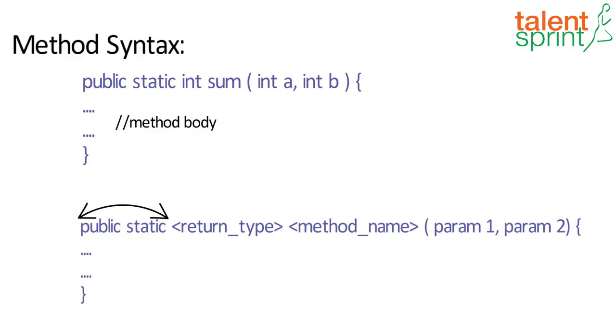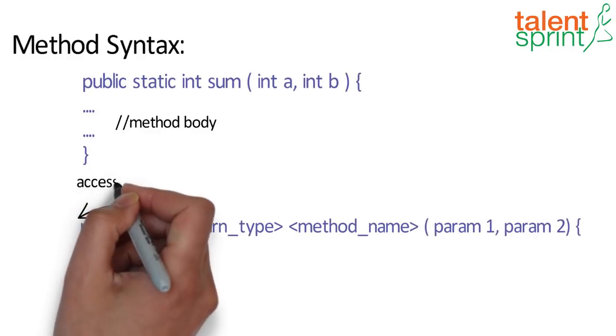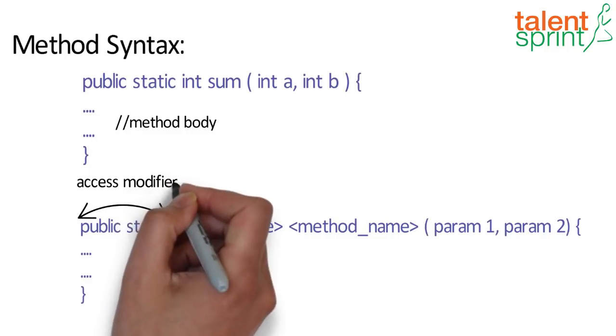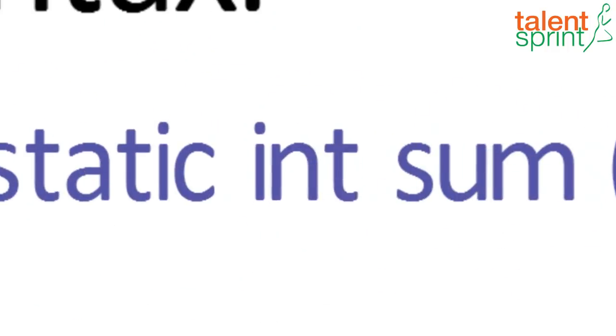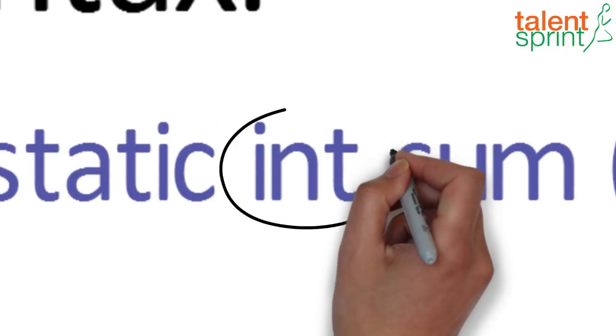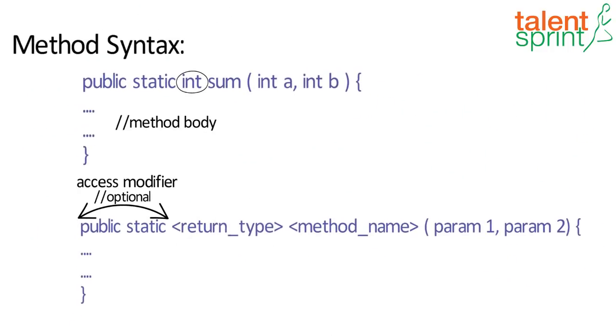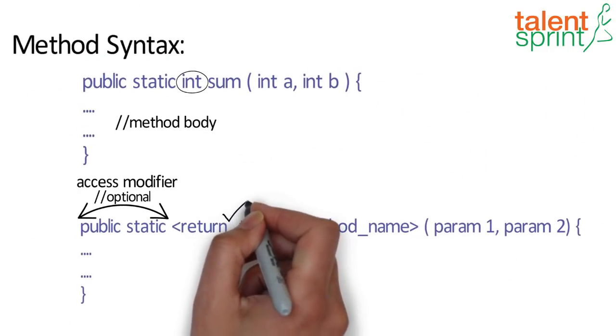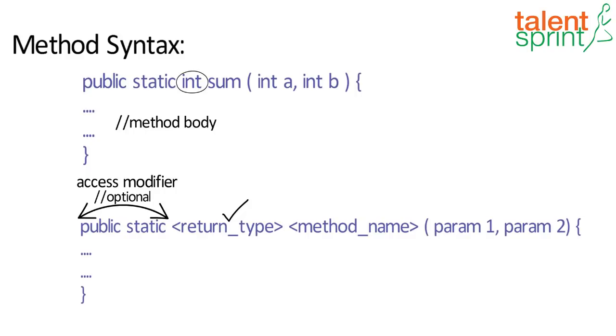Now public static, as you know, are the access modifiers. So they define the access type of the method and these are optional. Int or any other return type that you provide gives the program the knowledge of what value can be returned from this method back to the calling program or calling method.